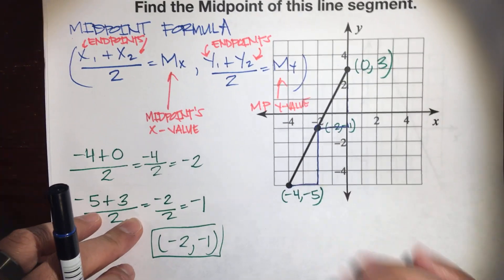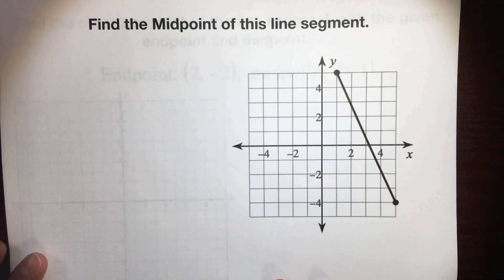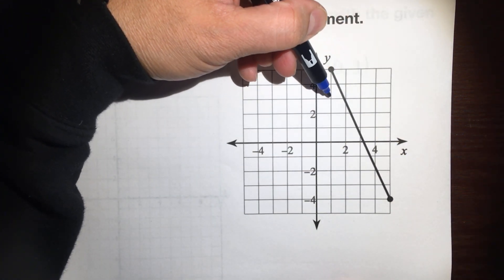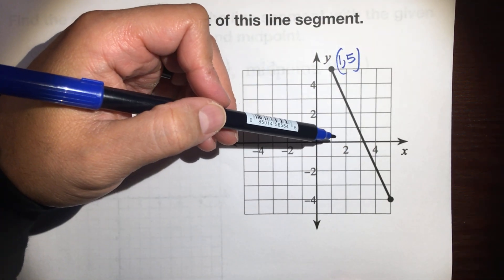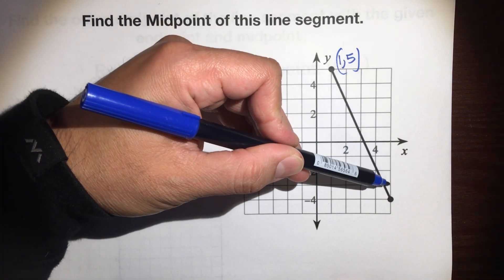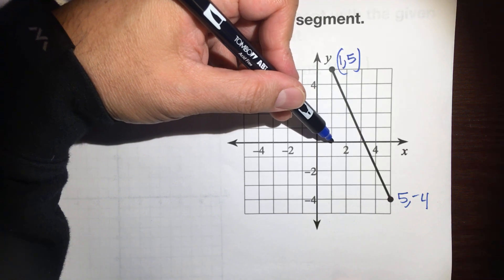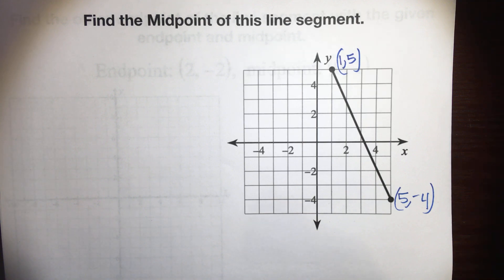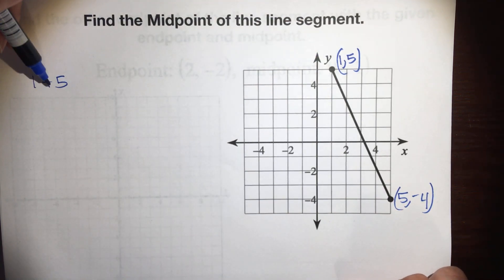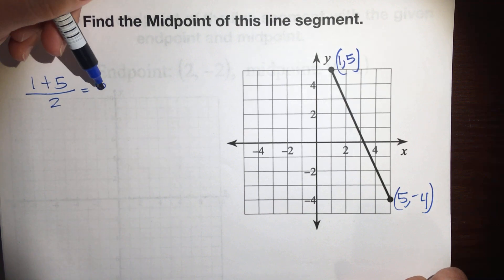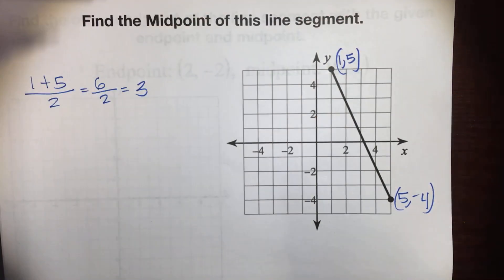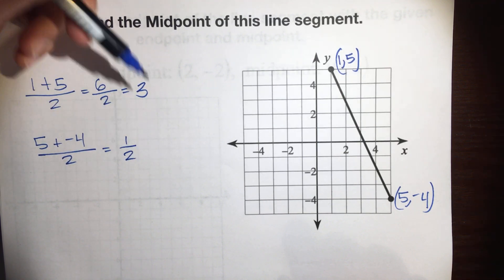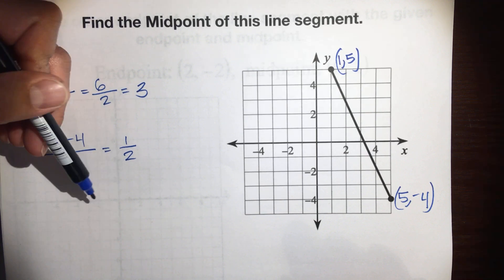Let's do a second example — find the midpoint of this segment. The coordinates of the two endpoints: the first is at 1, 5, and the second is at 5, negative 4. Let me double-check — 1, 5 and 5, negative 4. We plug this into the midpoint formula: average the x values — 1 plus 5 is 6, divided by 2 is 3. Average the y values — 5 plus negative 4 over 2, which is 1 over 2.